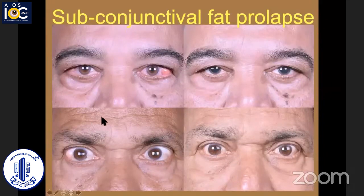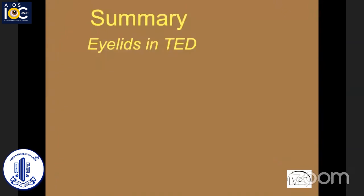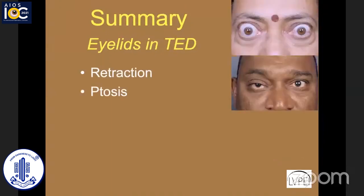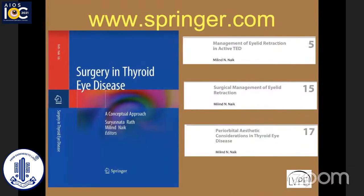Subconjunctival fat prolapse, although not really an eyelid issue, can be a cosmetic concern and just needs transconjunctival excision. Pre-malar and cheek swelling and fluid accumulation can be very frustrating — I haven't yet found any useful method of treating these. In summary, we talked about lid retraction, ptosis, and aesthetic issues pertaining to the eyelid, all of which are covered in three chapters in our textbook. Thank you very much.